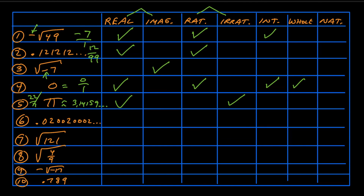For number six, there's a pattern: one zero, then two zeros, then three zeros, continuing with dot, dot, dot. But even though there's a pattern, it's not a repeating decimal like 0.121212... So this one is not rational — it can't be written as the ratio of an integer over an integer, making it irrational. It is real though — it's not the square root of a negative number, so it's not imaginary. But it's not an integer, a whole number, or a natural number.